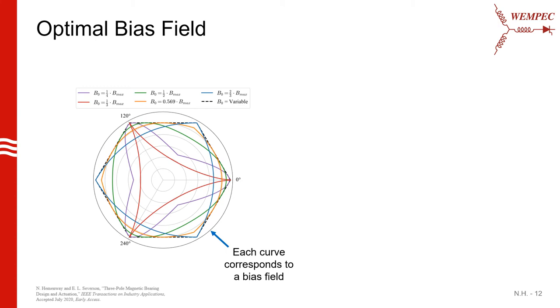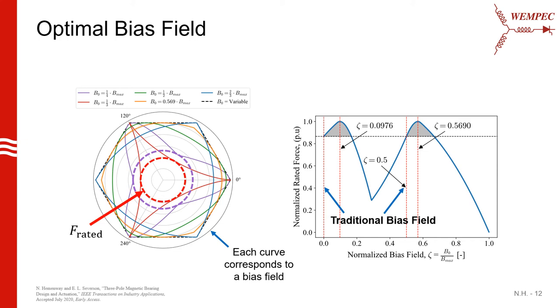Instead, the maximum force that we're able to produce in any direction is limited to one of these inner contours. So we can see that the rated force of our bearing is decreased and is highly dependent on our choice of the bias field. If we then plot out the normalized force rating of our bearing as a function of this bias field, we see that we end up getting these two optimal points. Furthermore, what you'll see in literature is that it's usually common to bias the bearing with either no bias field or at half of the maximum allowable field, and we see that these are not optimal. By choosing one of these optimal bias points over the traditional points, we can actually improve the force rating of our bearing by 15.5%.